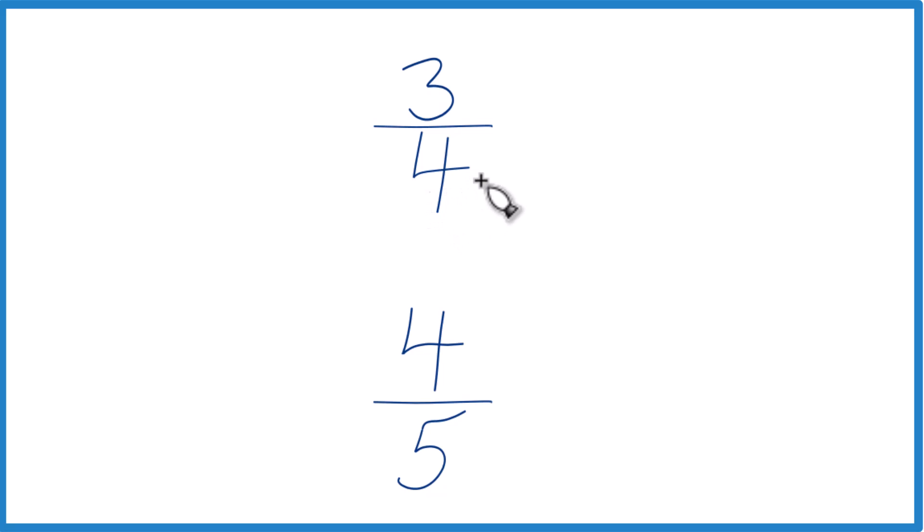The other way you could do this is find a common factor, so something that 4 and 5 both go into evenly. So we're looking for a common denominator, because then we can just compare the numerators. Let's do that.